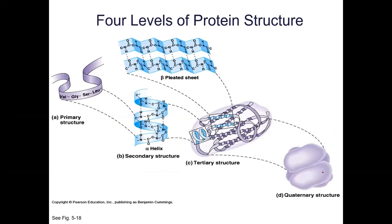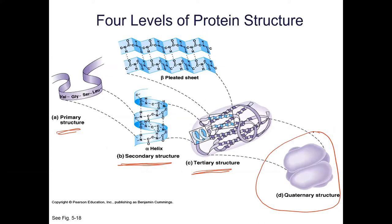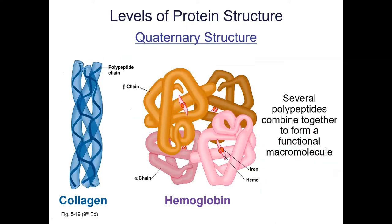Some proteins have a quaternary structure, where multiple subunits get together to form a larger complex protein. Classic examples are hemoglobin and collagen. Hemoglobin has four subunits and can carry four oxygen molecules; in the middle it has iron and heme, where oxygen is carried. Collagen consists of three protein chains that twist around each other like a rope, and it's found in your connective tissue.